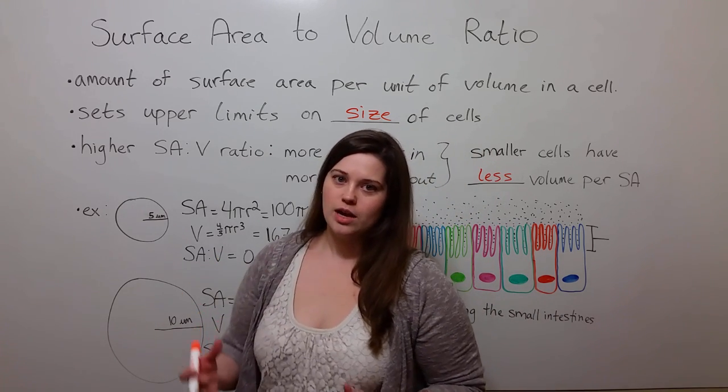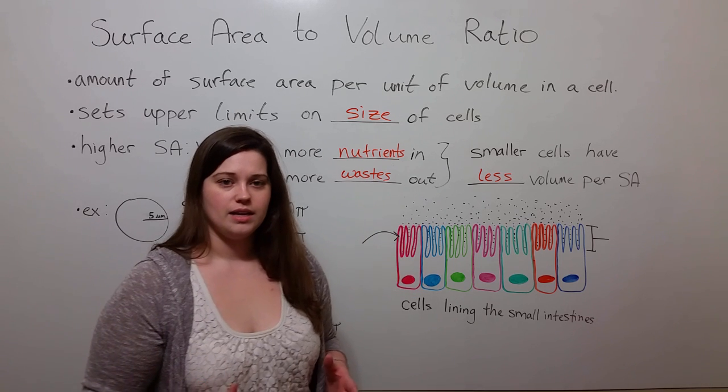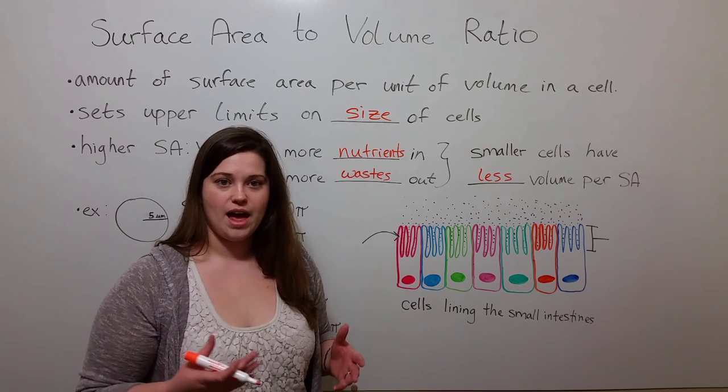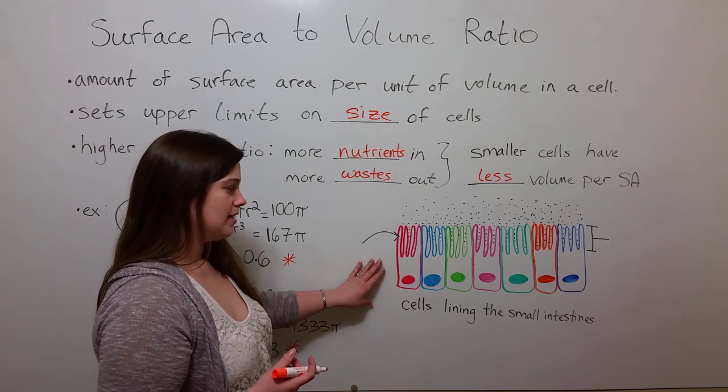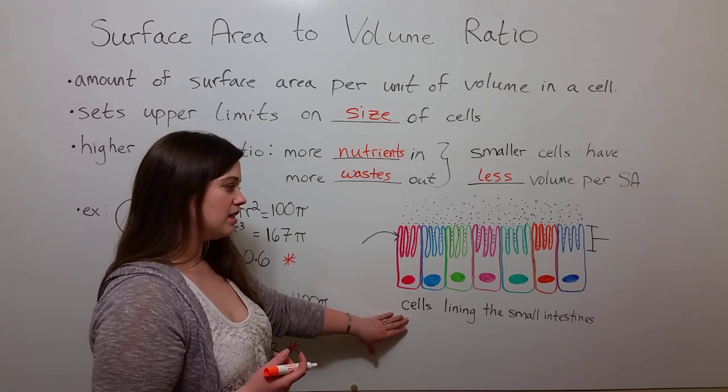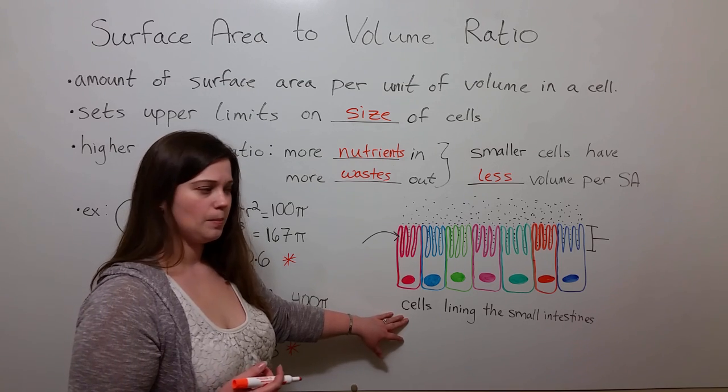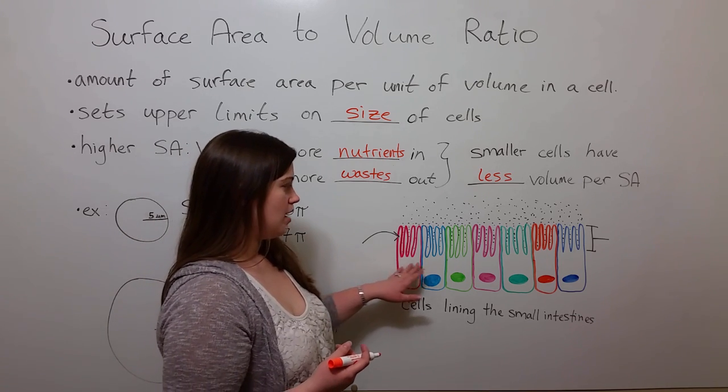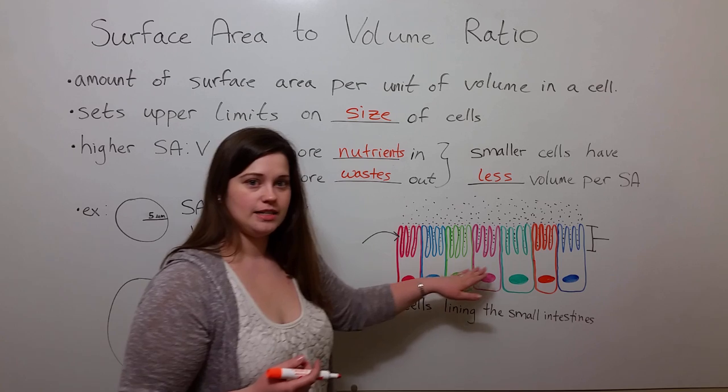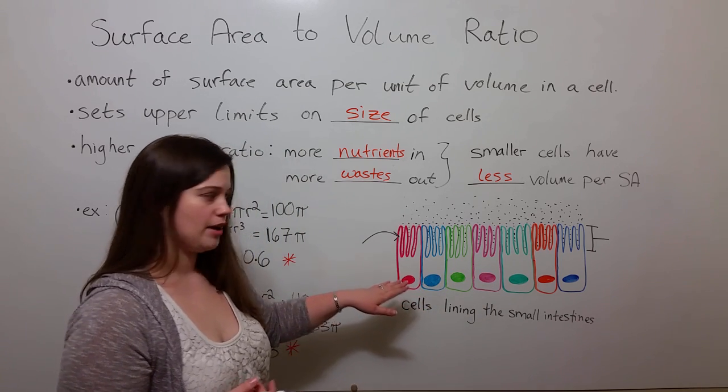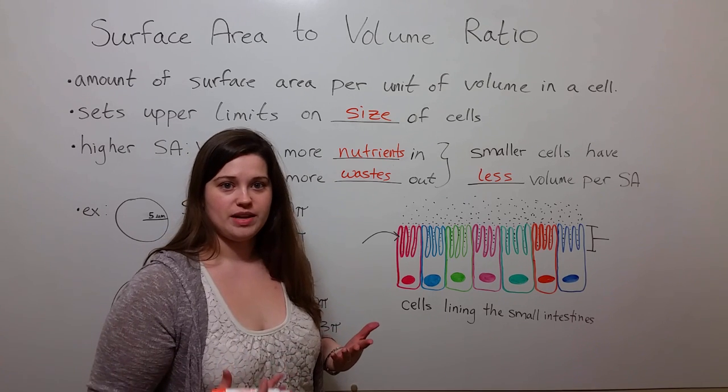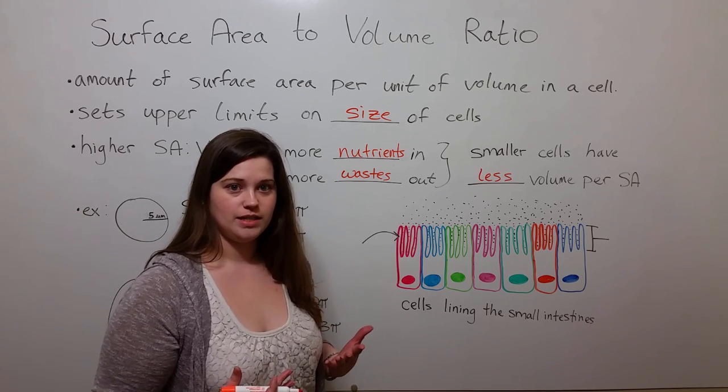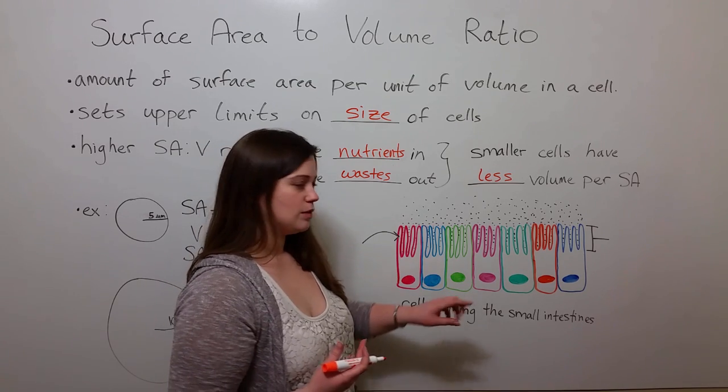Now let's look at a way that the body can create cells with extra surface area when needed. The best example of this is the cells lining the small intestines. Here I have drawn these cells. Each one is in a different color to allow you to see them better.